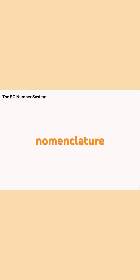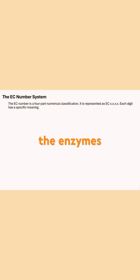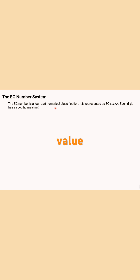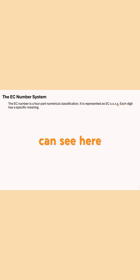The IUBMB nomenclature devised a specific number system for enzymes. Each enzyme was given a specific four-part numerical value, represented as EC (Enzyme Class) X.X.X.X. Each of these four digits has a specific meaning.